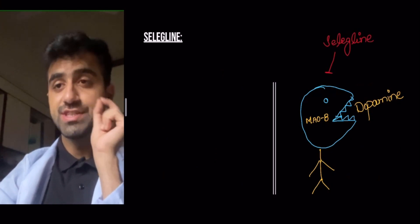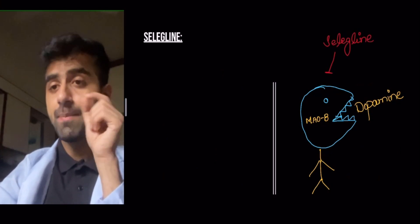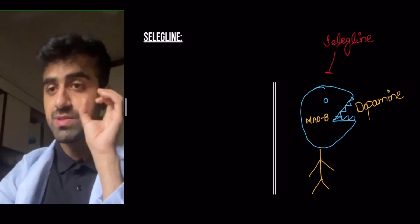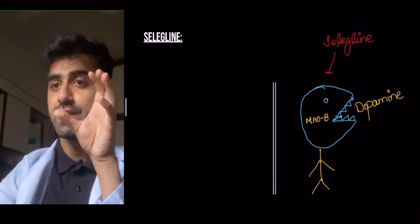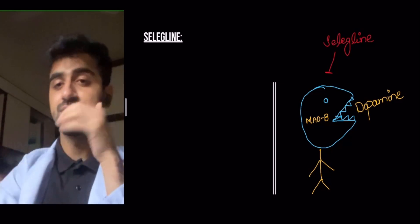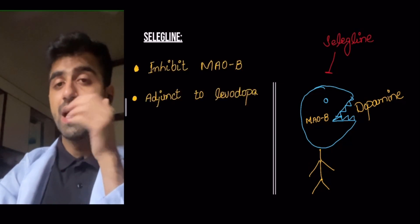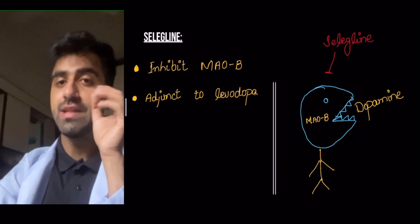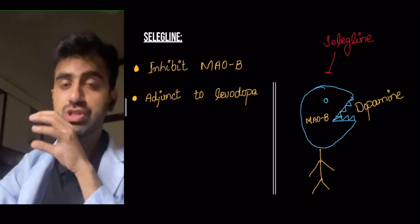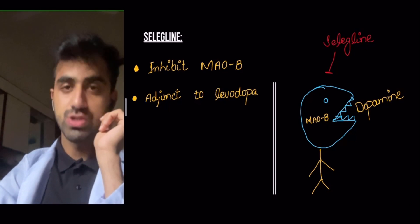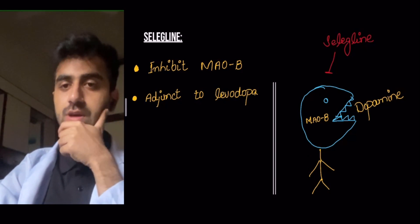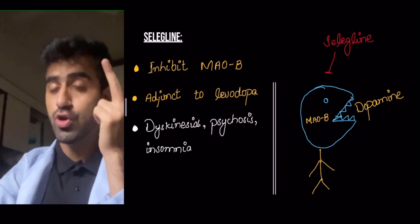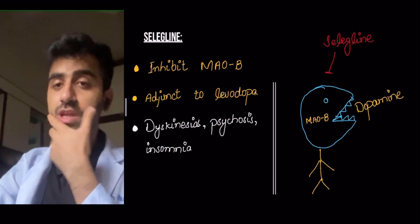Now let's look at selegiline. Selegiline inhibits MAO-B — I've illustrated MAO-B as a monster that eats up dopamine, and selegiline inhibits this monster. It's used as an adjunct to levodopa therapy to reduce phenomena such as the wearing-off phenomenon. Its adverse effects include dyskinesias, psychosis, and insomnia due to excess dopamine in the brain.